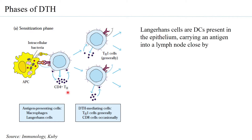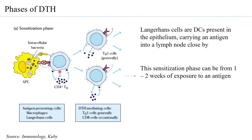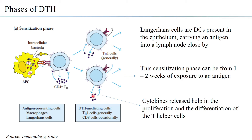If the antigen is present close to the epithelium, it is the Langerhans cells — the dendritic cells present near the epithelium — that carry the antigen into a nearby lymph node and present it on the surface, thereby activating CD4+ T helper cells. This sensitization phase can last anywhere from one to two weeks of exposure to an antigen. The cytokines released help in the proliferation and differentiation of T helper cells, producing more and more sensitized T helper cells.